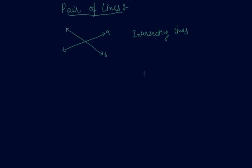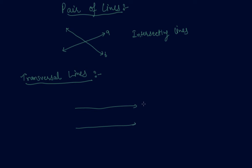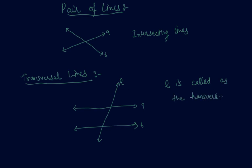So these two lines are called intersecting lines. Now let me tell you what transversal lines are. Let's say these are two lines A and B, and a line L cuts both these lines. So L is called the transversal to both the lines.